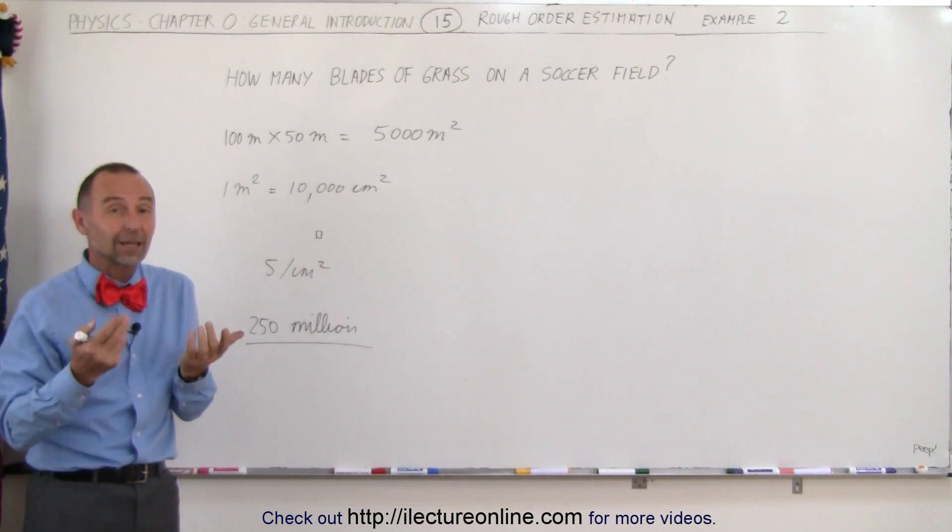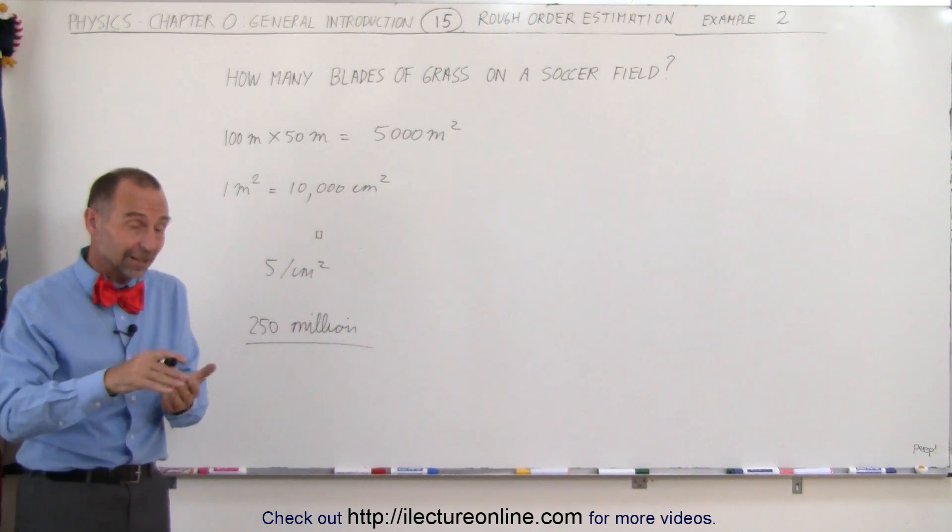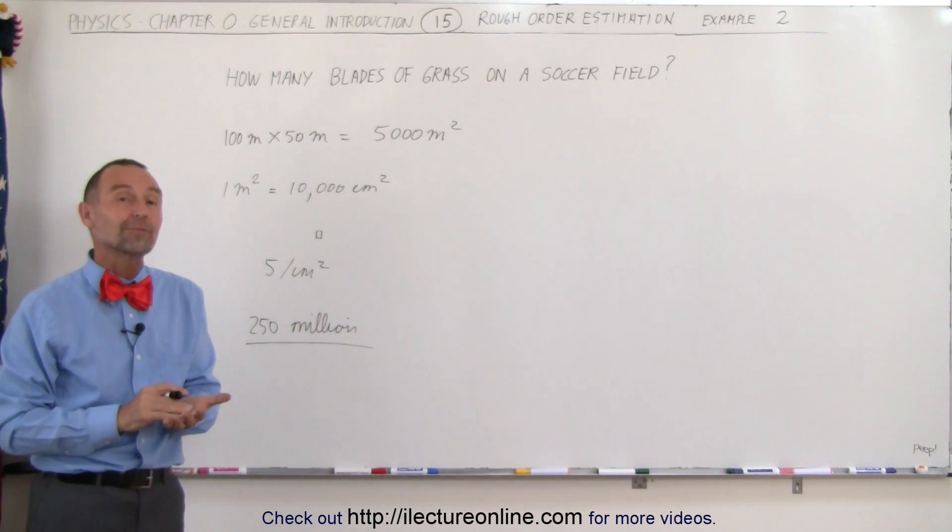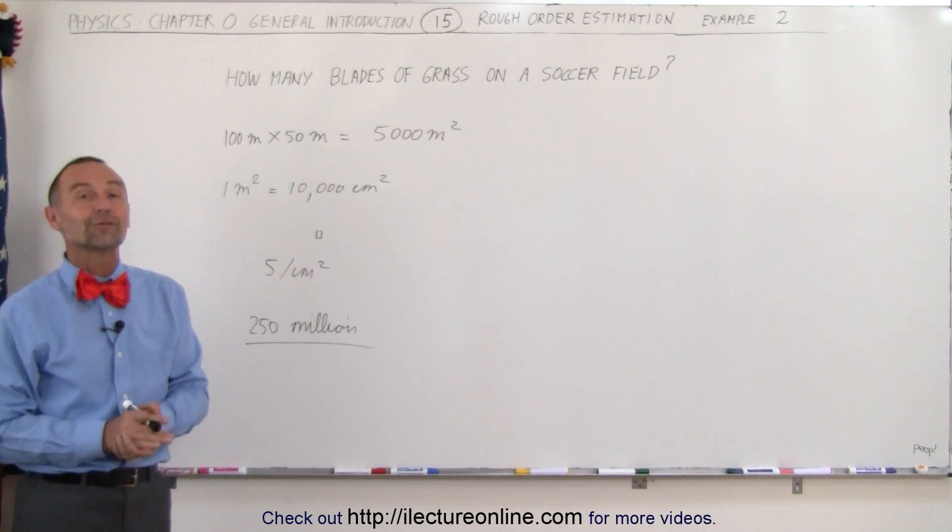That's how we very quickly do an estimation to see if the answer that we end up with on a calculator after calculating it for a number of minutes is reasonable or not. That's what we call rough order of estimation.